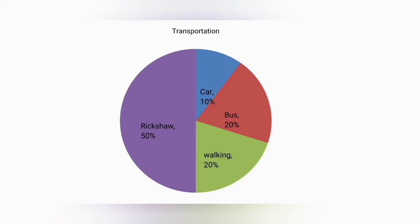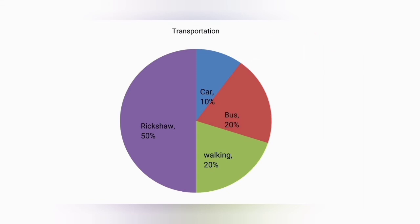Some students belonging to a well-to-do family come to school by car. In fine, it could also be said that the school is located at a place having a good communication system.